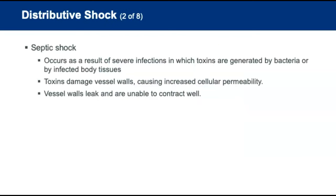Septic shock occurs as a result of a severe infection, usually bacterial, in which toxins are generated by the bacteria or by infected body tissues. You have widespread dilation of vessels combined with plasma loss through injured vessel walls, and the resulting decrease in fluid leads to shock.